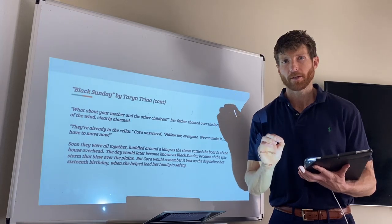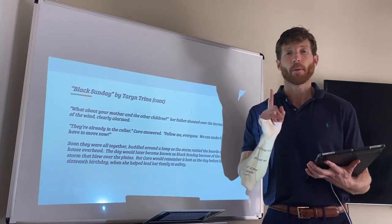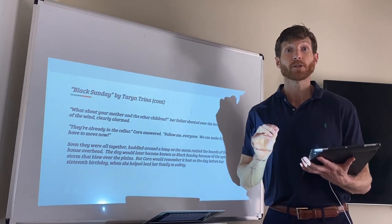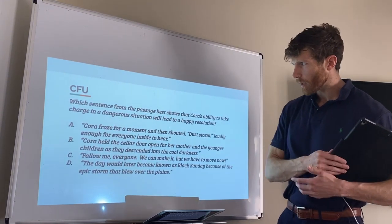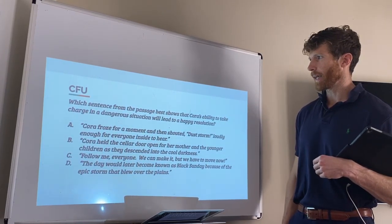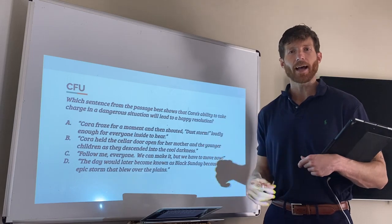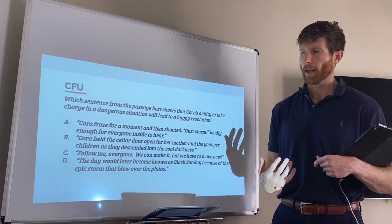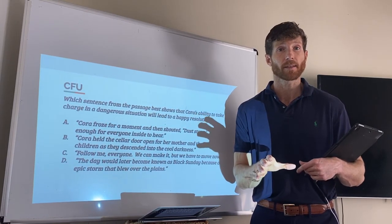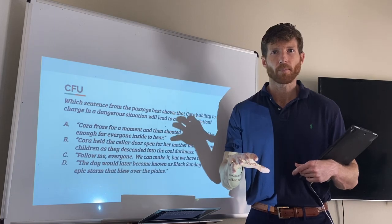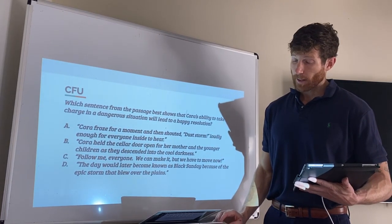Now for your check for understanding today, you're going to answer a question on the rest of the story, which we'll read together. Before we start, I want to go over the CFU question so you know what to look for as we read. Your CFU question: which sentence in the passage best shows that Cora's ability to take charge in a dangerous situation will lead to a happy resolution? Remember, a resolution is how the conflict or problem in a story is solved. The dangerous situation must be the conflict we just discussed — a dust storm is approaching and the whole family is in danger. Let's finish the story together.